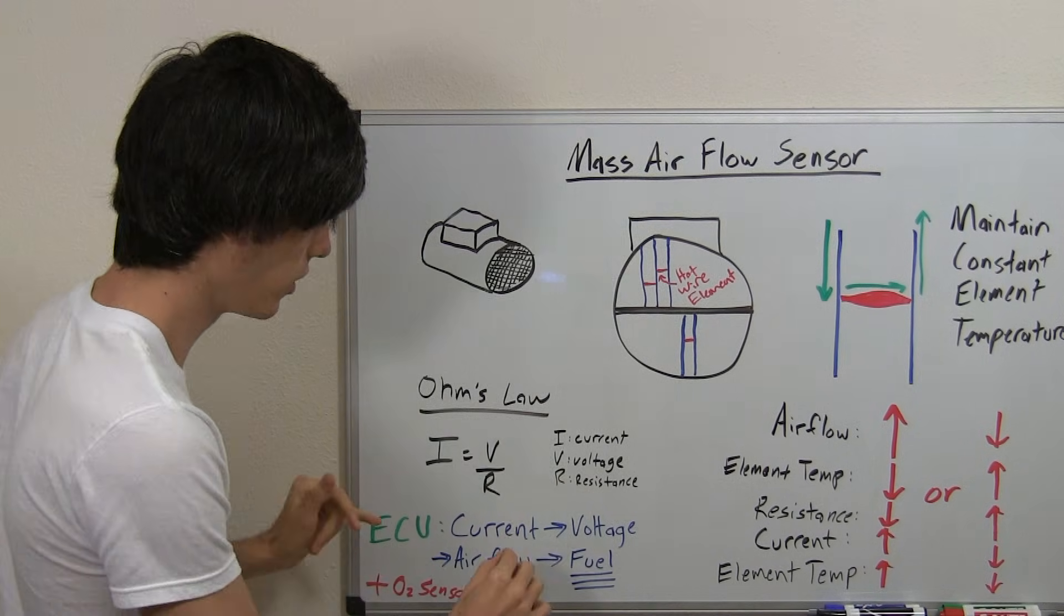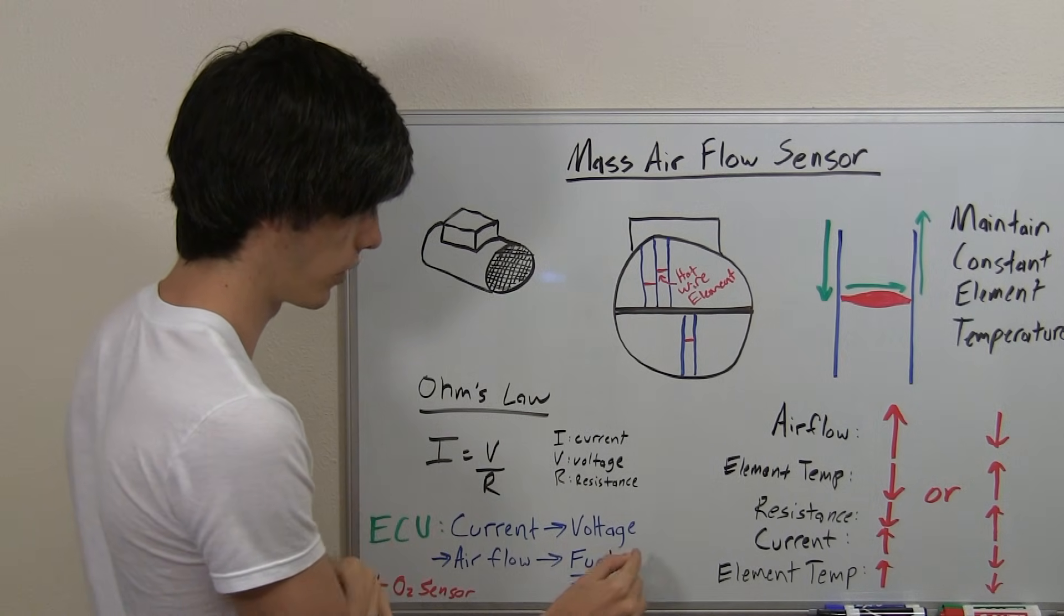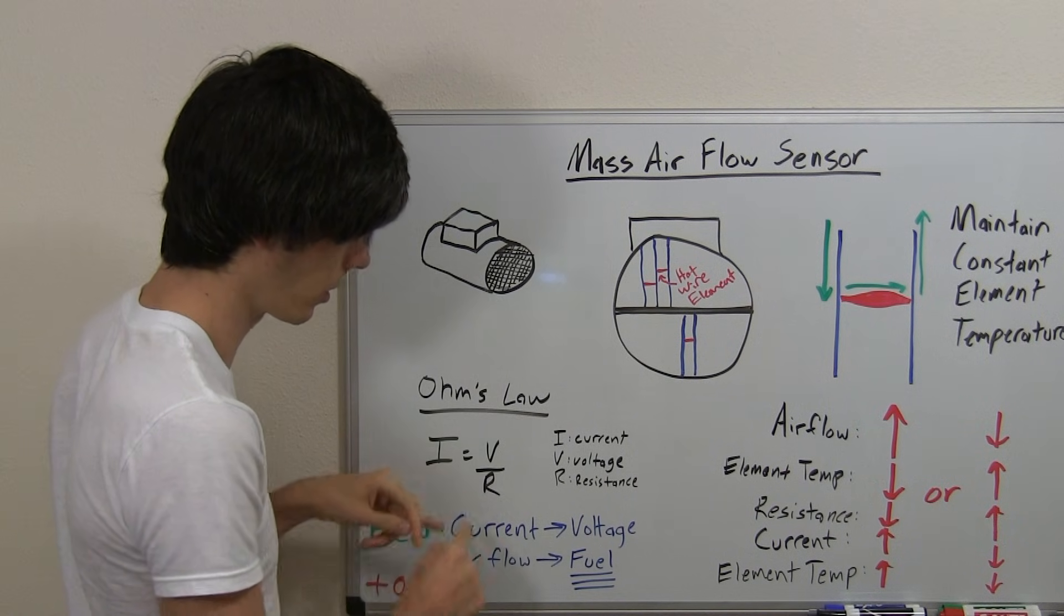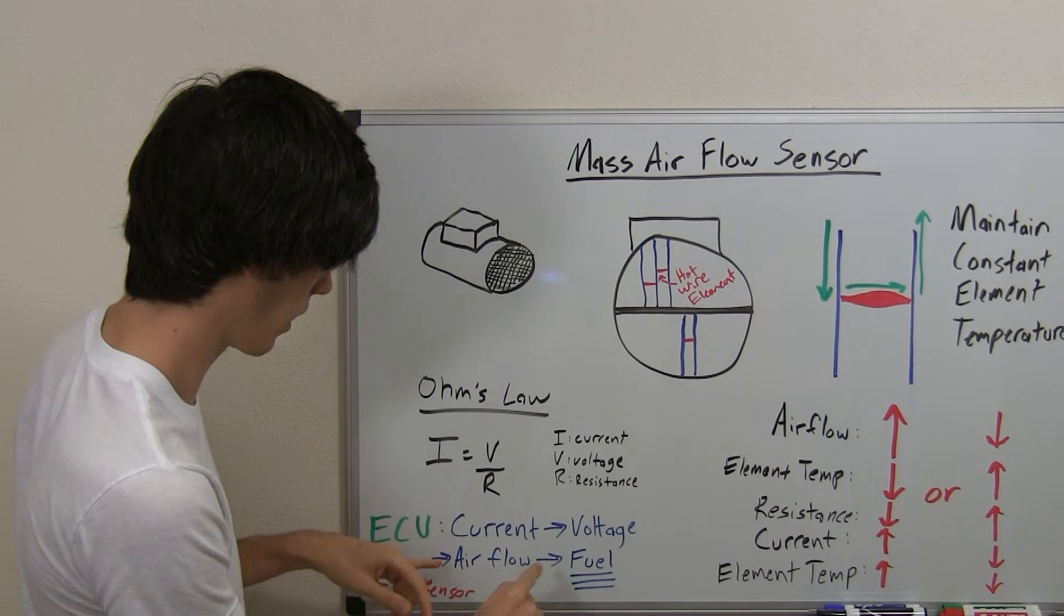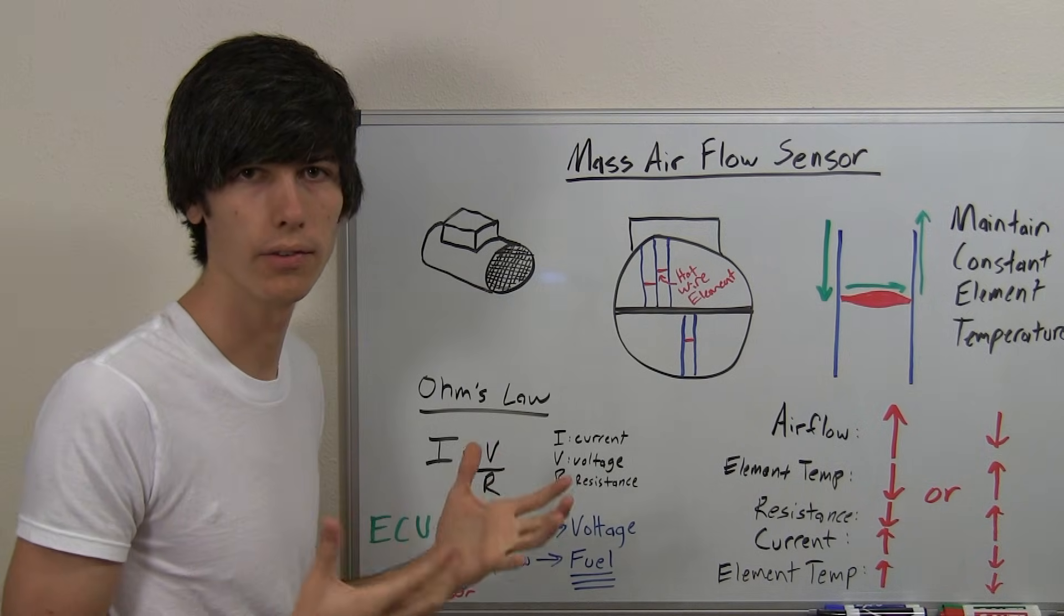What the ECU does is it translates this current into a voltage change. With that voltage change, it knows that there's a difference in airflow.